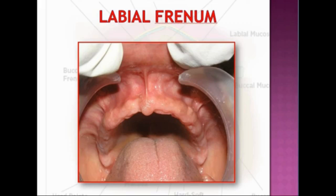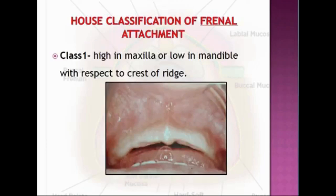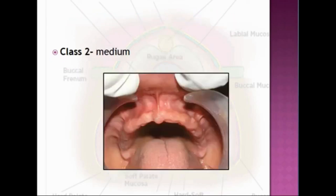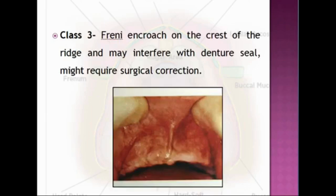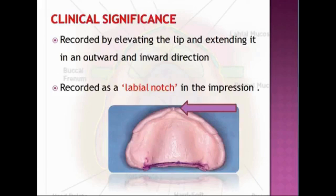During peripheral border molding and impression making procedures, the frenal attachment has been classified by House as Class 1, 2, and 3. Class 1 is high in the maxilla or low in the mandible with respect to the crest of the ridge. Class 2 is medium, and Class 3 is where the frenum encroaches onto the crest of the ridge and may interfere with denture seal, possibly requiring surgical correction.